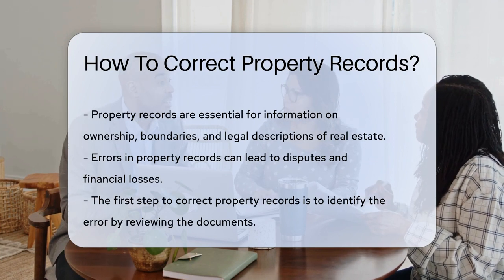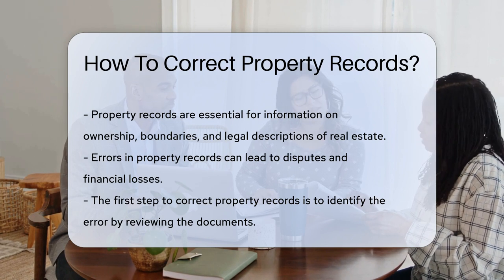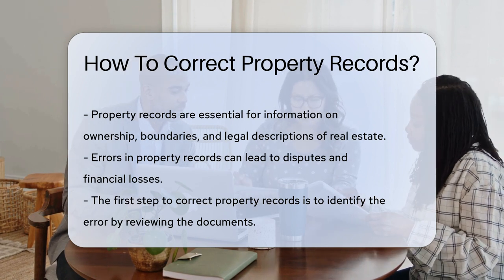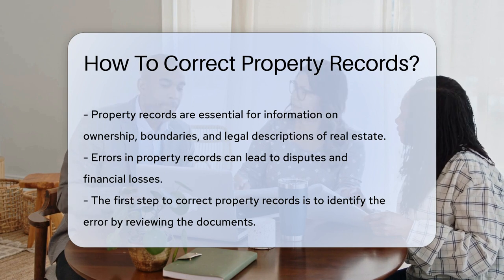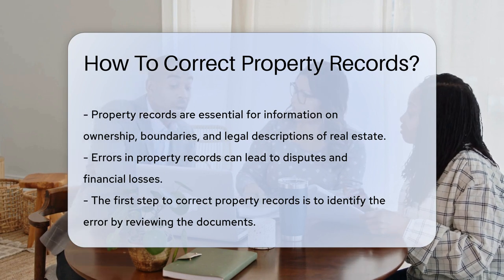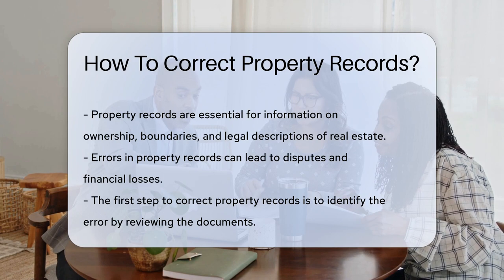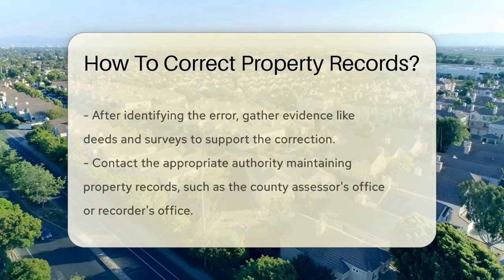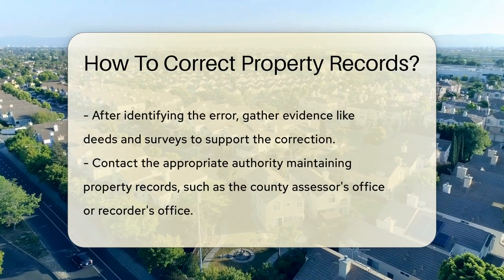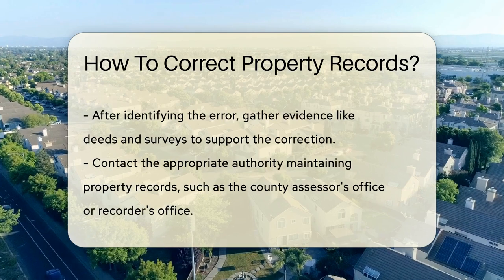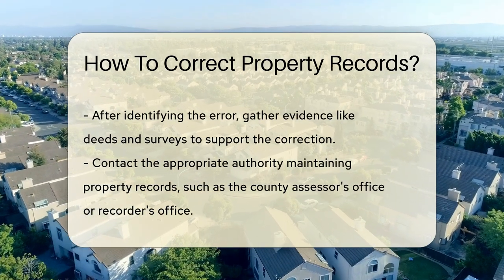Errors in property records can lead to various issues, such as disputes and financial losses. To correct property records, the first step is to identify the error by thoroughly reviewing the existing documents. Once the error is identified, you can proceed to gather evidence to support the correction, such as deeds, surveys, or other relevant documents.